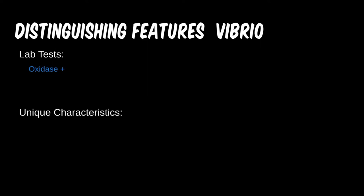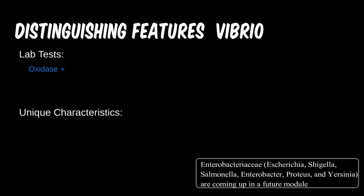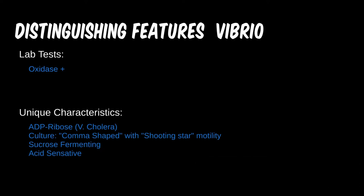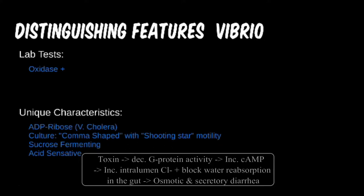Vibrio now makes the third oxidase positive bug in a row. It does help to separate these out from the Enterobacteriaceae family, which are oxidase negative. Cholera also has the ADP ribosylation discussed in a past lecture. This toxin causes severe diarrhea by decreasing human protein activity and increasing water into the lumen of the bowel.